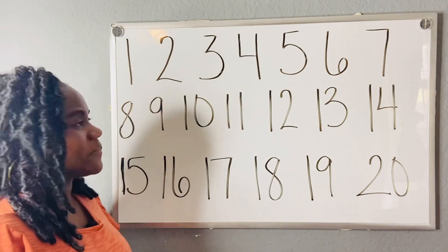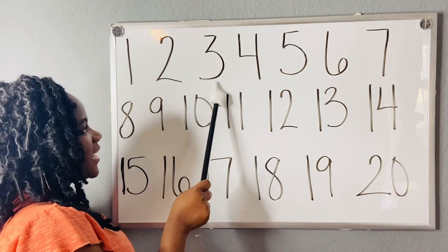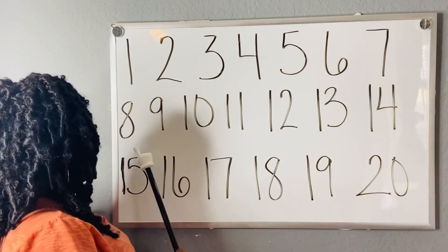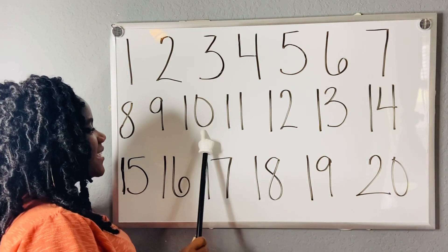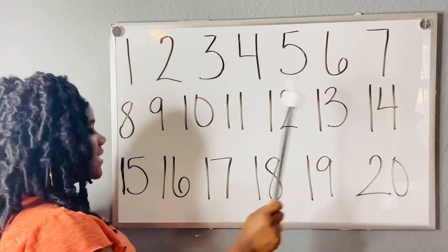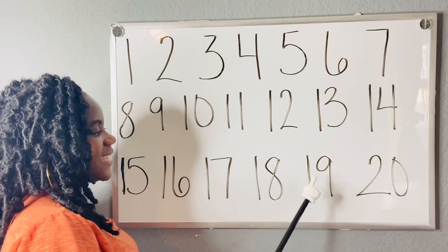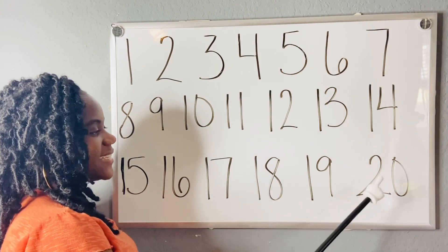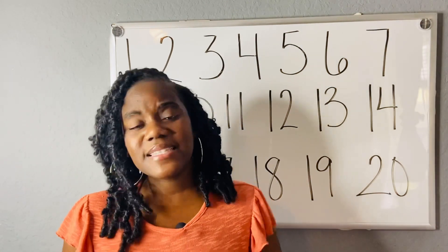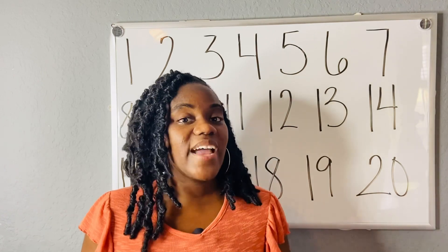One more time. 1, 2, 3, 4, 5, 6, 7, 8, 9, 10, 11, 12, 13, 14, 15, 16, 17, 18, 19, 20. So now there are going to be missing numbers and I need your help to find out what numbers are missing.